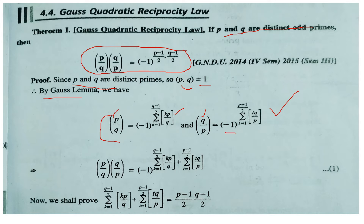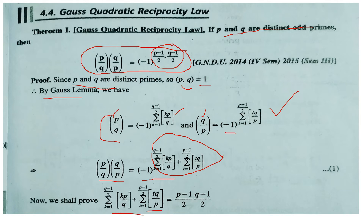Now we multiply both these expressions. When we multiply them, the powers of (-1) are added. Our main aim is to prove that the combined exponent — the sum of the two floor-function summations — equals (p−1)/2 · (q−1)/2.